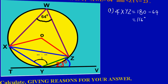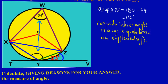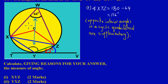We have a cyclic quadrilateral, and the theorem states that opposite interior angles in a cyclic quadrilateral are supplementary — meaning they sum to 180 degrees. The angle given at W is 64 degrees, which is opposite to the angle at Y that we're trying to find. Subtracting 64 from 180 gives us 116 degrees for angle XYZ.